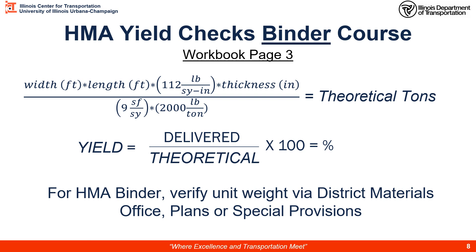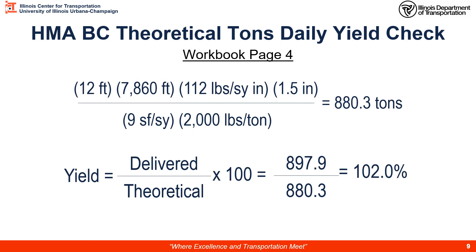If not told otherwise, use 112 pounds per square yard per inch of thickness for HMA binder course materials. Sometimes the designer will indicate a different density on the plan sheets; when in doubt, verify with your district materials office. On workbook page 4, we have an example calculation: a 12-foot paving line, 7,860 feet long, using 112 lbs/sq yd·in, and a 1.5-inch thick mat. With the conversions of 9 and 2,000, we calculate a theoretical tonnage of 880.3 tons. Our yield equation is delivered over theoretical — adding up weight tickets gave 897.9 tons — divided by 880.3 times 100 gives a yield check of 102%.